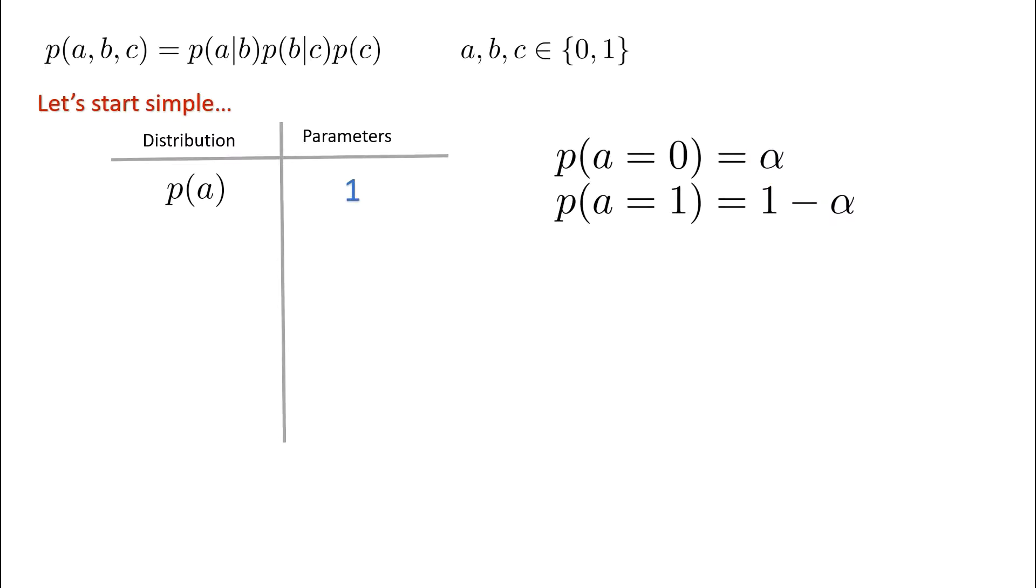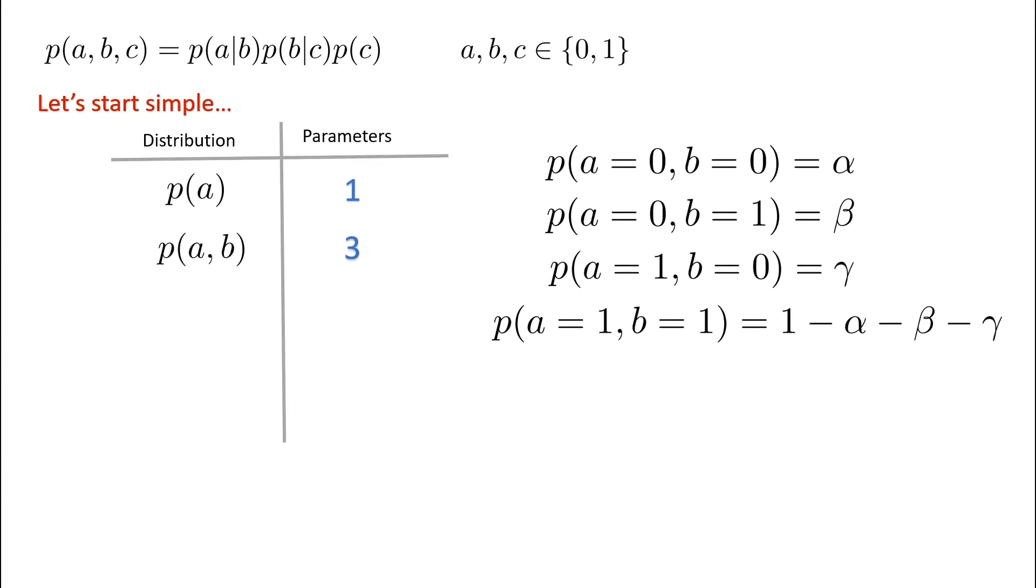Let's consider another distribution. The probability of A and B. Now, the number of parameters you might have already guessed is 3 that are required to define this joint distribution. But let's see why. We can say the probability of A being 0 and B being 0 is alpha. A being 0, B being 1 is beta. A being 1, B being 0 is gamma. And for A being 1 and B being 1, because we know all the probabilities must sum to 1, we can just simply do 1 minus alpha plus beta plus gamma. We only require three parameters to describe this two binary joint distribution. Alpha, beta, and gamma.